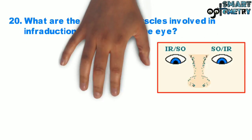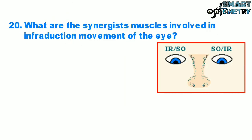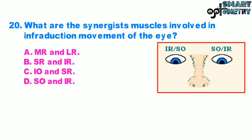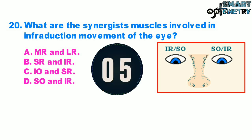Question 20. What are the synergist muscles involved in the infraduction movement of the eye? A. Medial rectus and lateral rectus, B. Superior rectus and inferior rectus, C. Inferior oblique and superior rectus, D. Inferior oblique and inferior rectus.